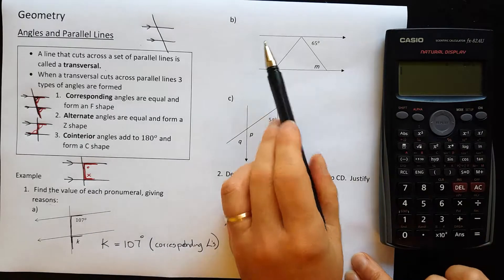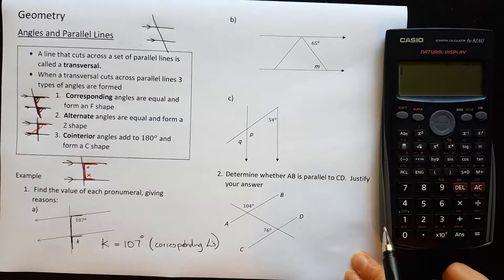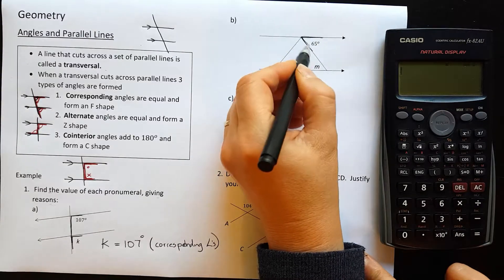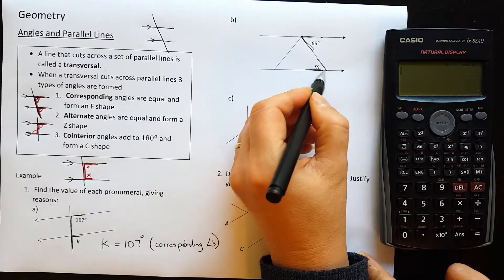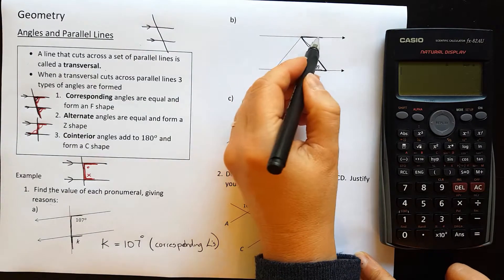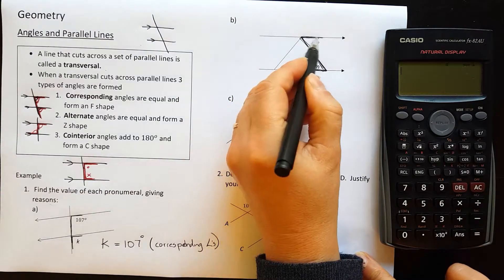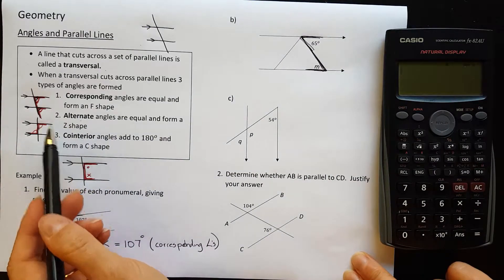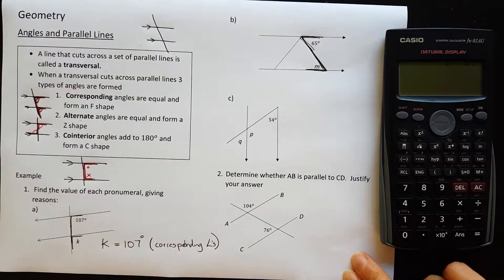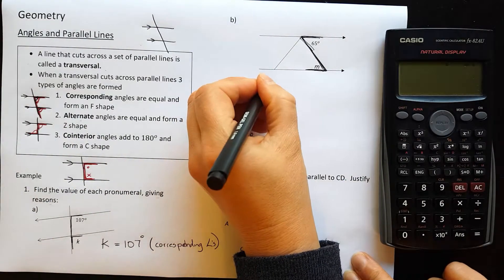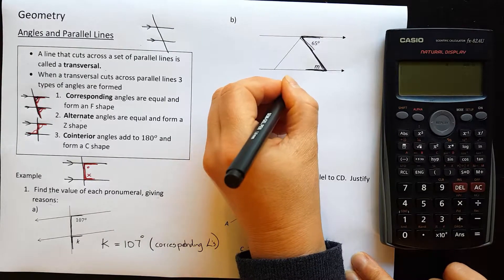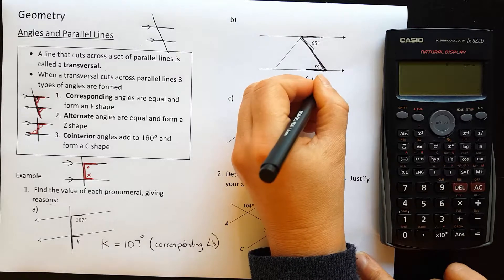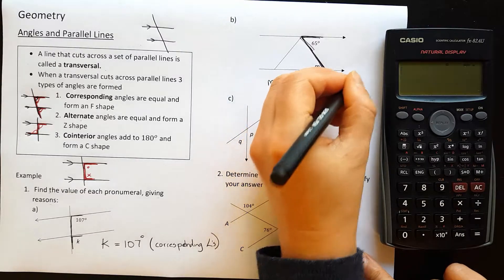Let's go on to question B, part B. Let's draw the arms on the angle. There's an arm on that angle and then there's an arm on that angle. And we connect them up, we have a Z shape. And that means that those angles are equal and they're called alternate. So that means that M is equal to 65 degrees, giving reasons, alternate angles.